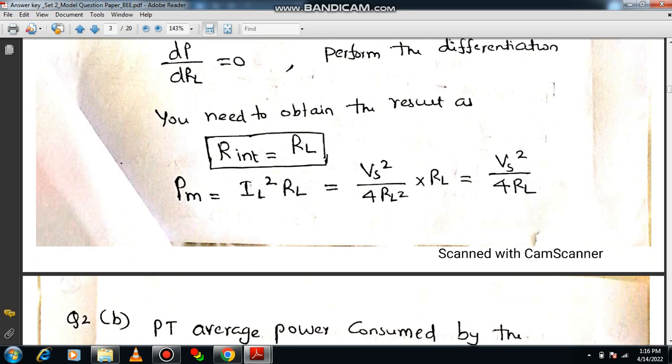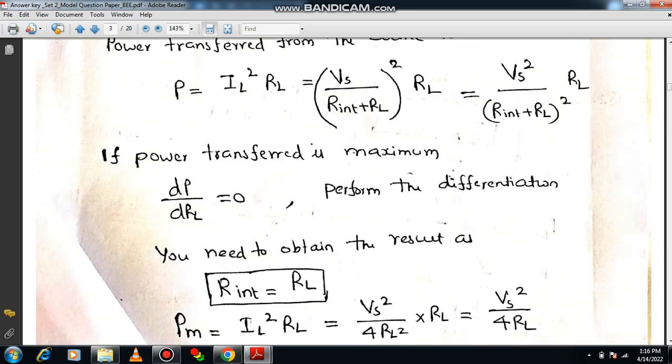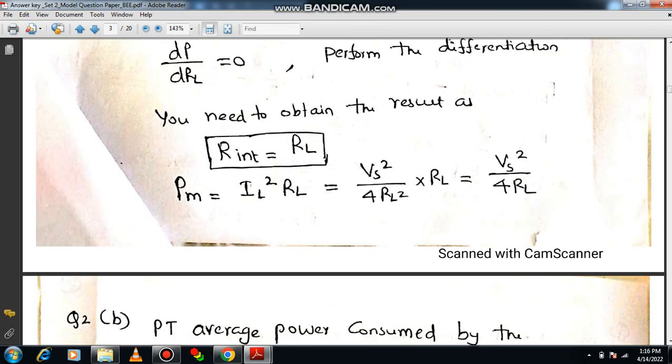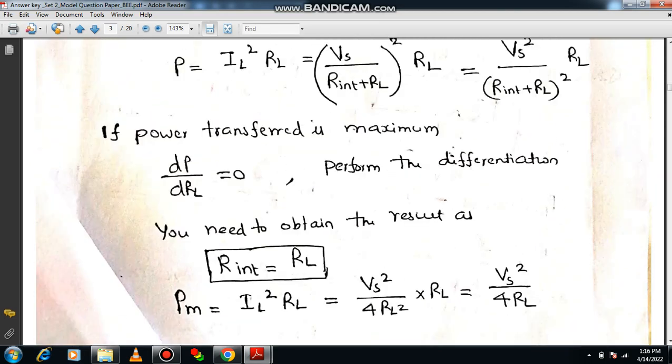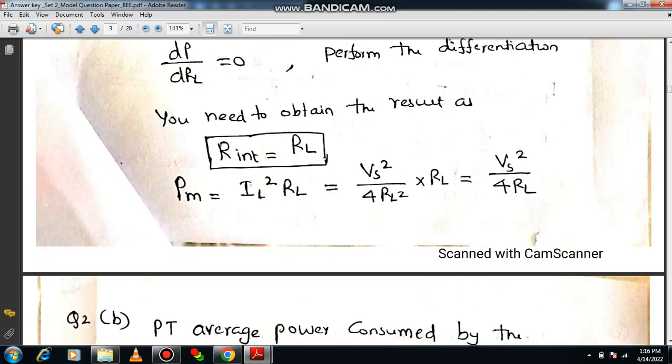That is equal to IL²RL. So please do substitute here. In this equation, Rint and RL will be equal. So instead of Rint you can put RL. Then you will be getting 2RL whole square, that means 4RL². Here RL and RL will be getting cancelled at once. Ultimately you will be getting Vs²/(4RL). So this is the maximum value of power which is transferred from source to load. Likewise you can plan for the derivation. Step by step points are required so that you will be getting better score.